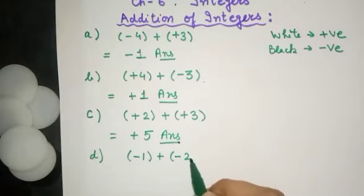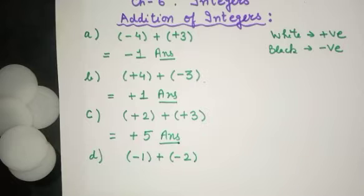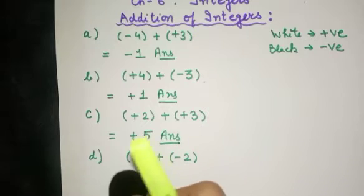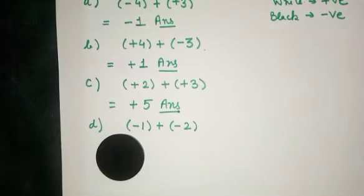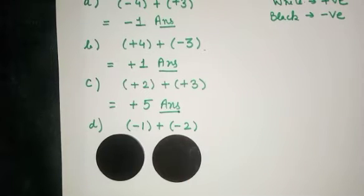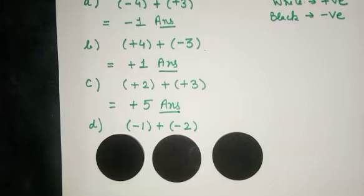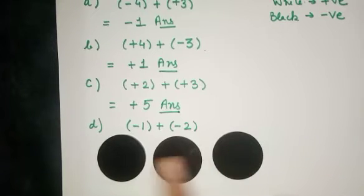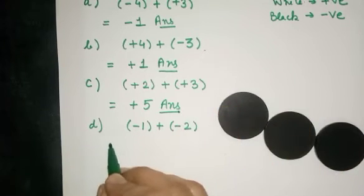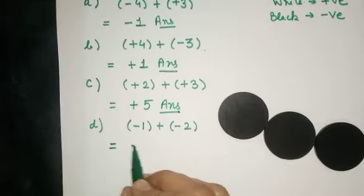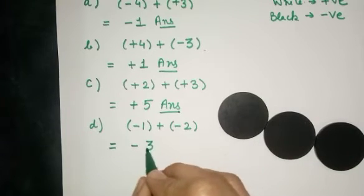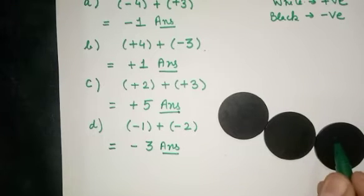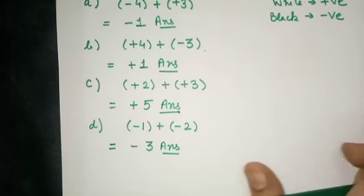Now let's take an example where both numbers are negative: minus 1 plus minus 2. We need one black coin and then two more black coins — 1, 2, 3 total. All are black, representing negative numbers, and there are three, so the answer is minus 3.